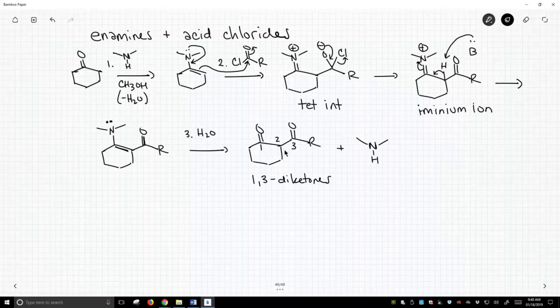And as it turns out, these are a fairly useful class of compounds to be able to access, and we can do it through using the reaction of an enamine as a nucleophile on an acid chloride.